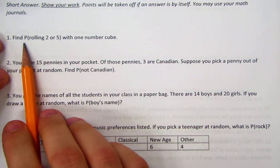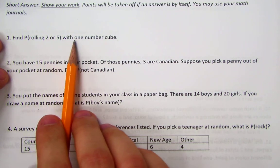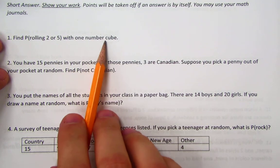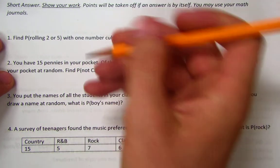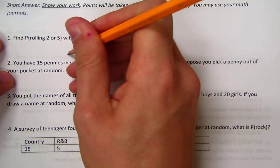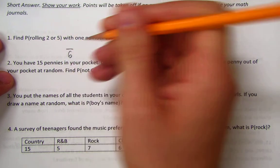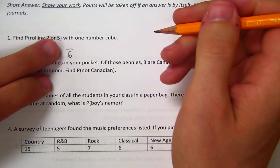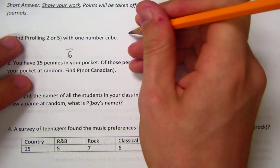Number 1 says, define the probability of rolling a 2 or a 5 with one number cube. The cube has 6 sides. I want to find the total number of possibilities, the total number of outcomes for rolling one die is 6. The probability of rolling a 2 or a 5, there's two ways of doing this. You need to draw out your possibilities.